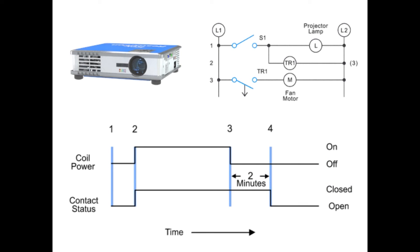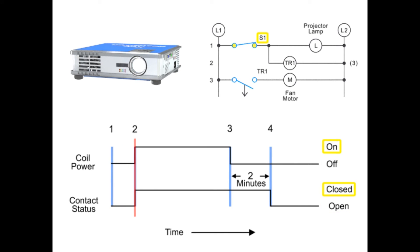Let's look at a common application of a normally open, timed open relay in the operation of a video projector. In this circuit, closing switch S1 turns on the projector bulb and activates timer coil TR1. With timer TR1 energized, normally open contact TR1 immediately closes, energizing the fan motor, which controls the cooling of the projector.